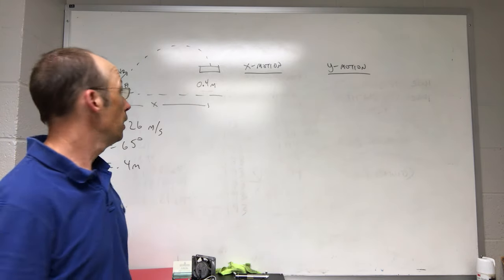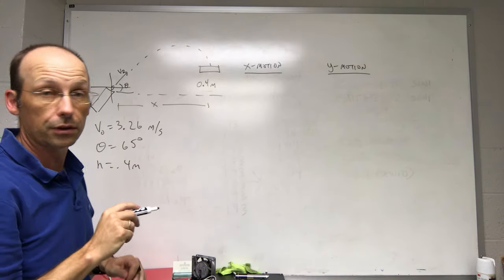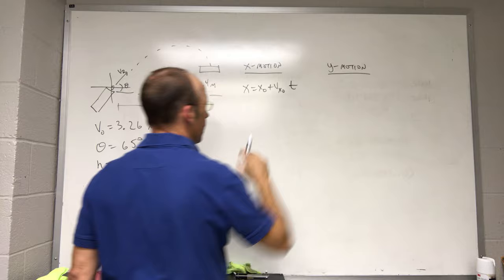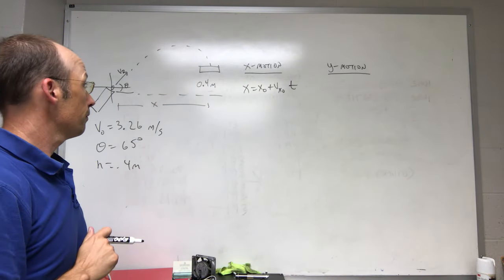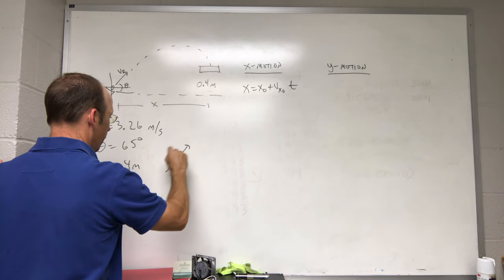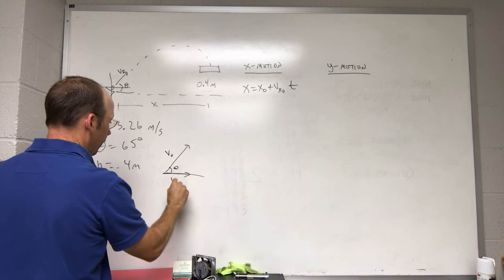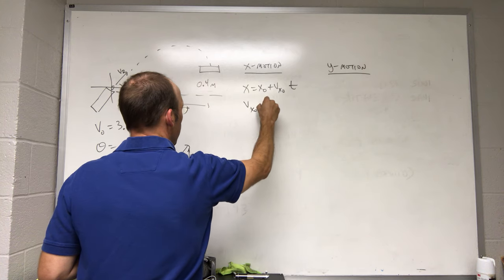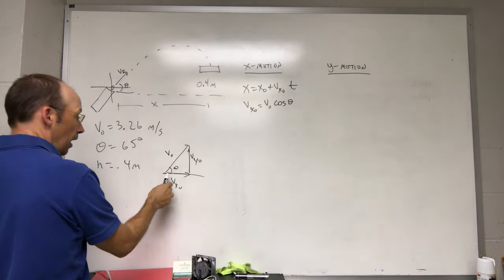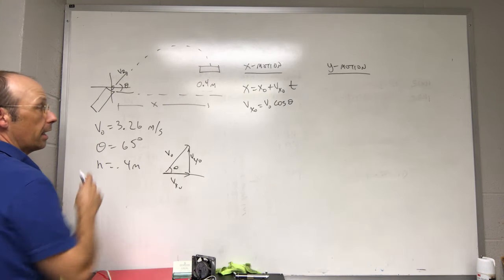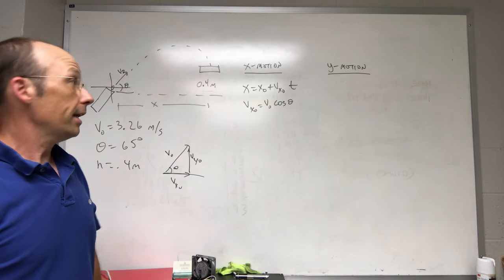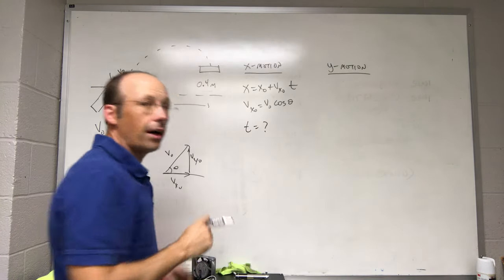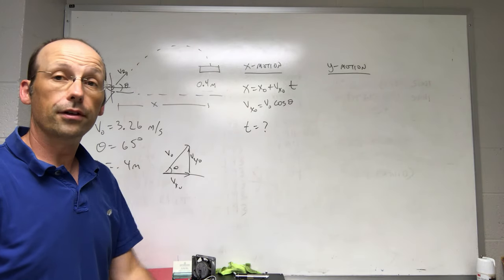So in the x direction, if I call this my origin so that it starts at x equals 0, then I have this equation: x final is x initial plus vx initial times delta t. So my x velocity, since I'm shooting the ball at an angle, this is my vx0. That's the adjacent side of the triangle, so vx0 equals v0 cosine theta because cosine is adjacent over hypotenuse. So that's really all I know in the x direction. I want to find x. I know the value for this, but I don't know time.